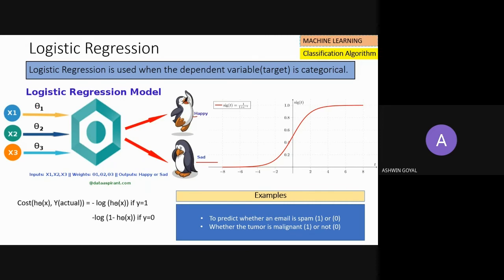We have a few parameters, and based on those parameters, we predict a class. The typical example used in machine learning courses is whether a cancer tumor is malignant or benign. Malignant is when the tumor is harmful; benign is when it's harmless. This is a one-zero classification game. A very common interview question: what model is used in Gmail's spam classifier? The answer is logistic regression.